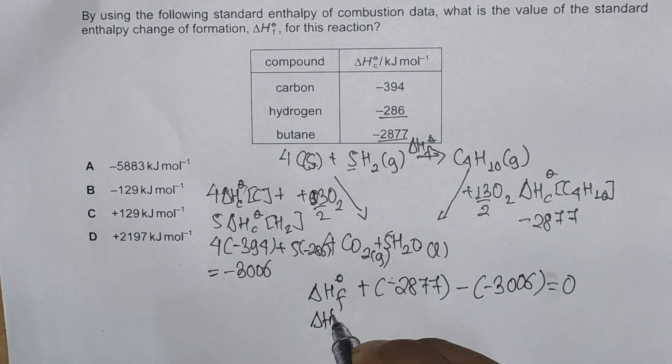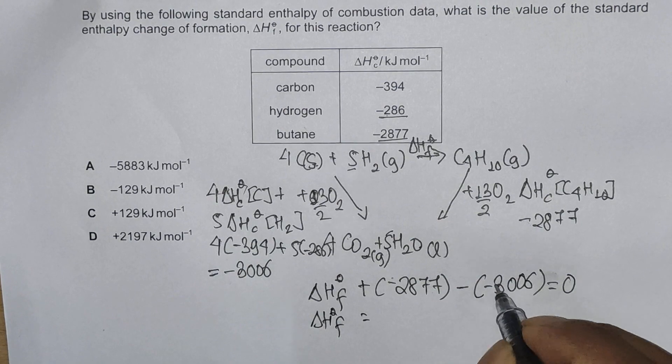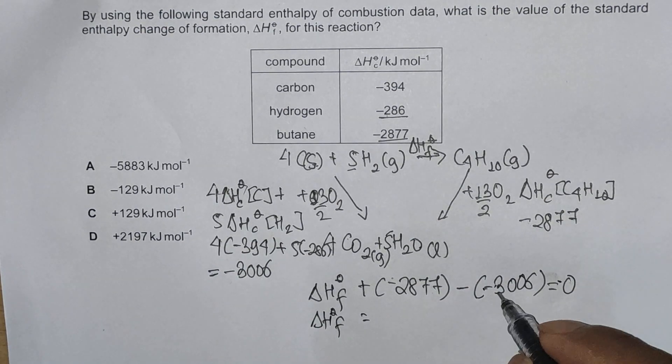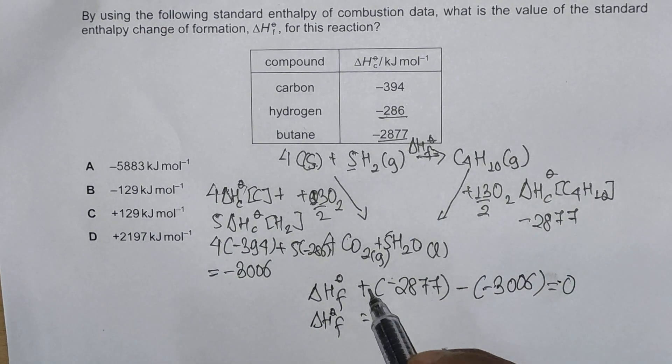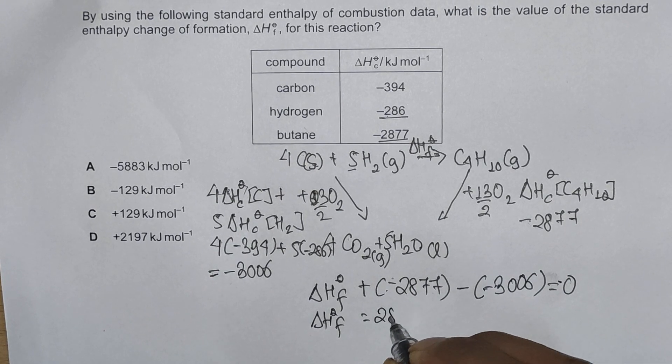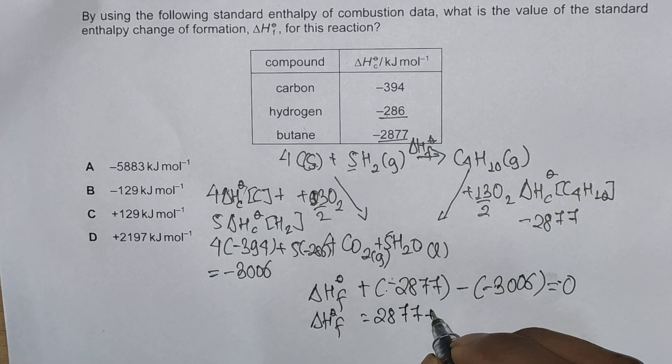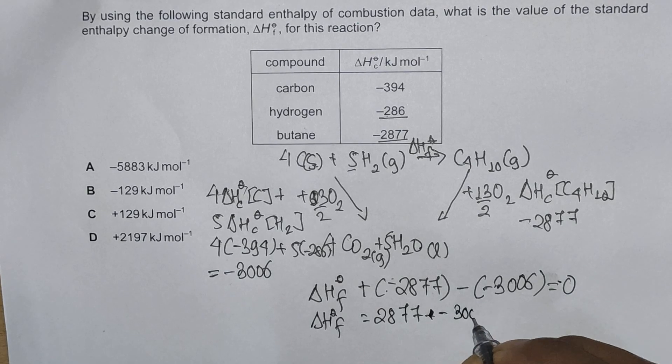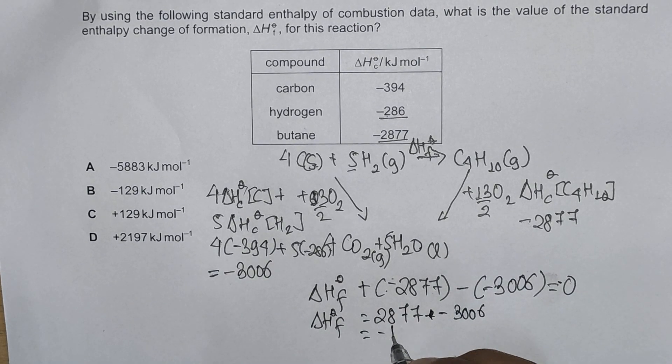So delta H naught F is, this becomes plus, so plus becomes minus when it goes to the opposite side, this is negative so it becomes positive 2877 plus minus 3006, which is minus 129 kilojoules per mole, making B the correct answer.